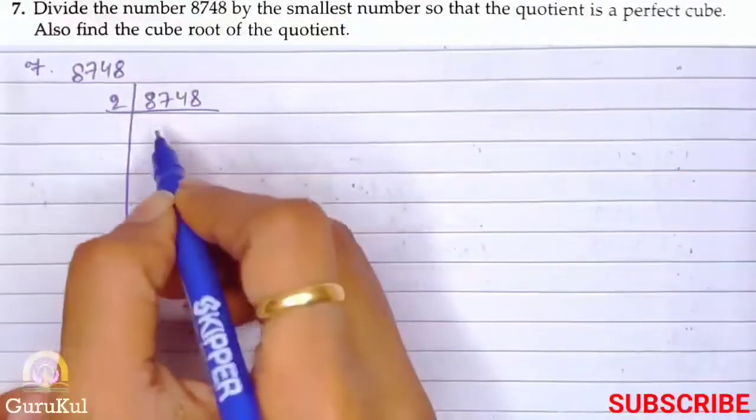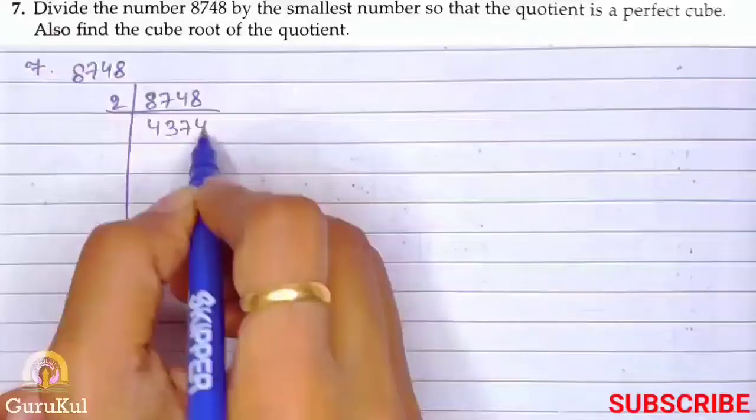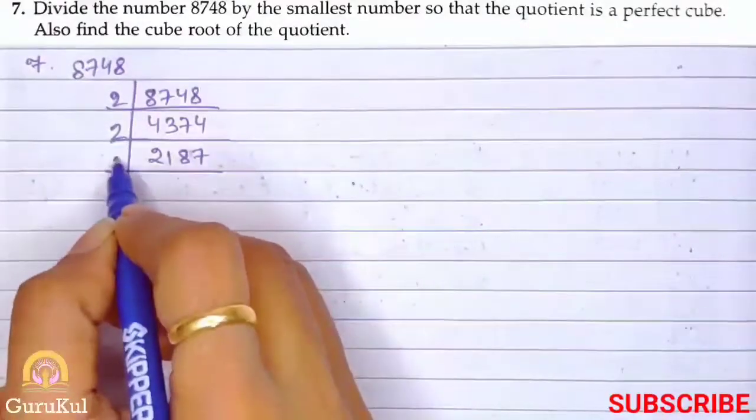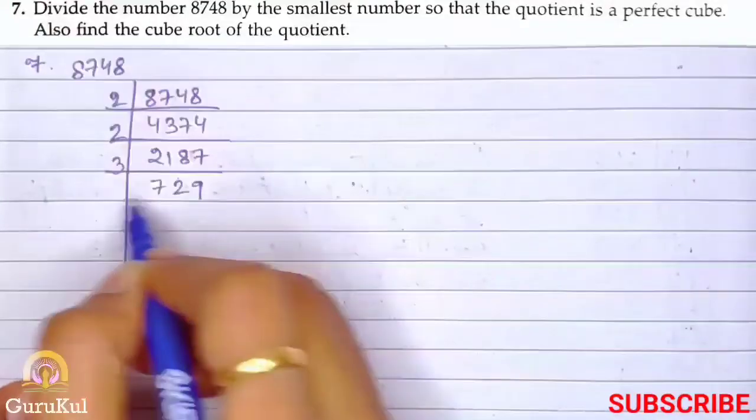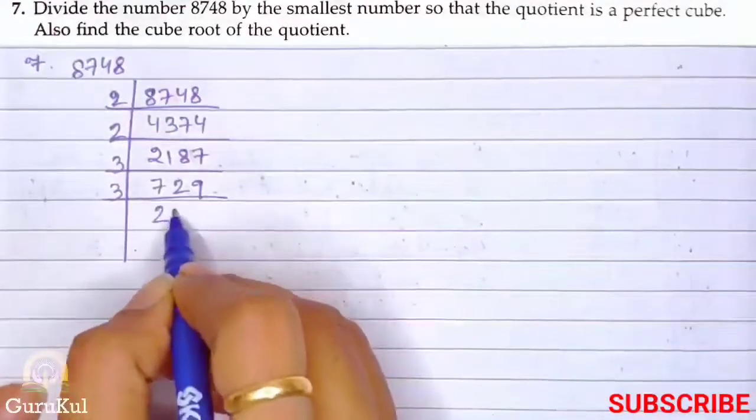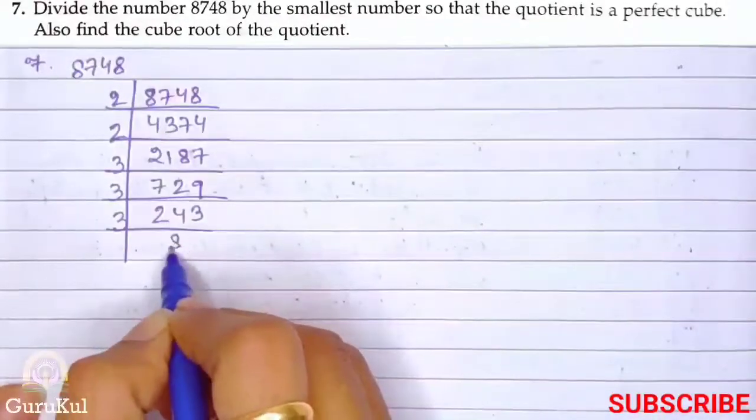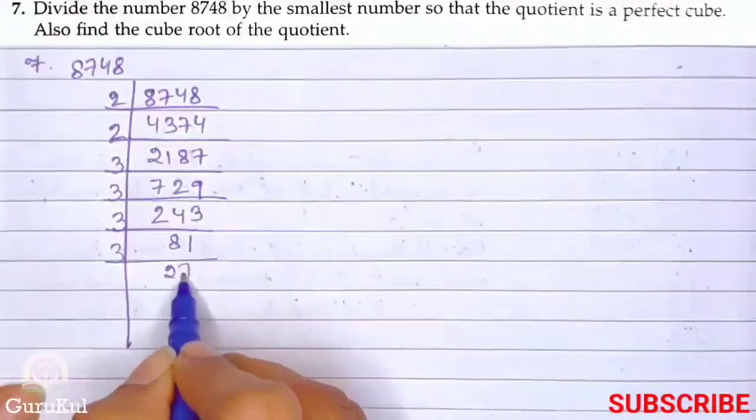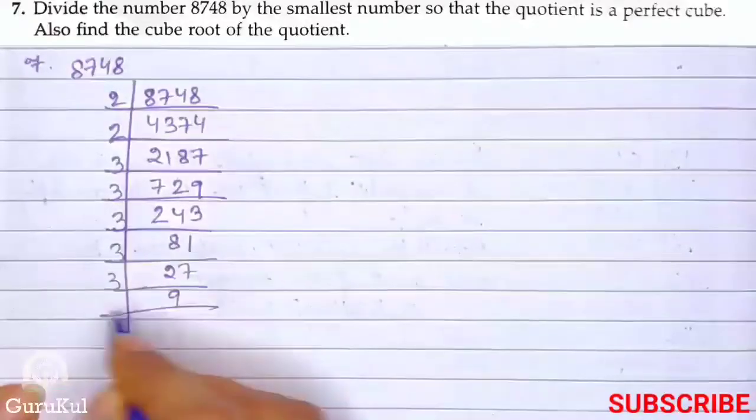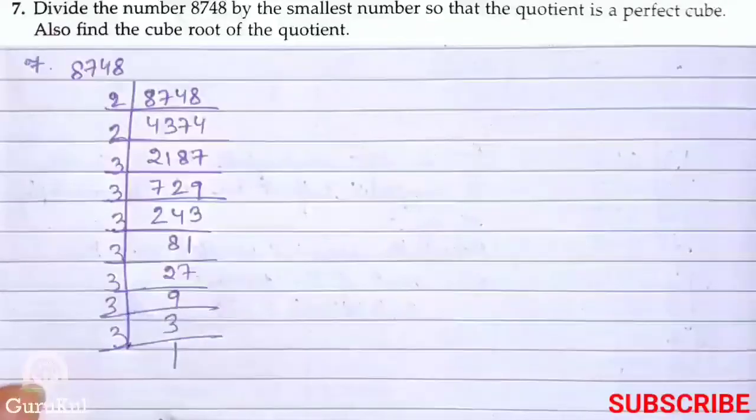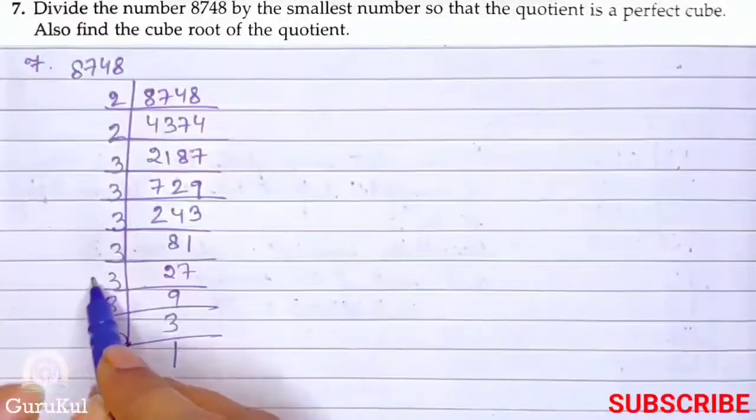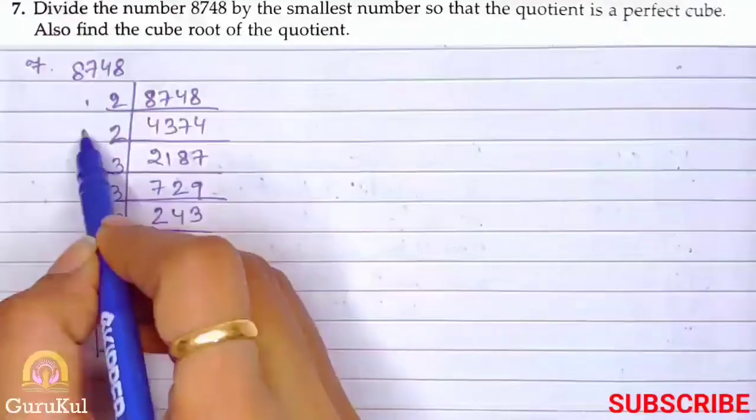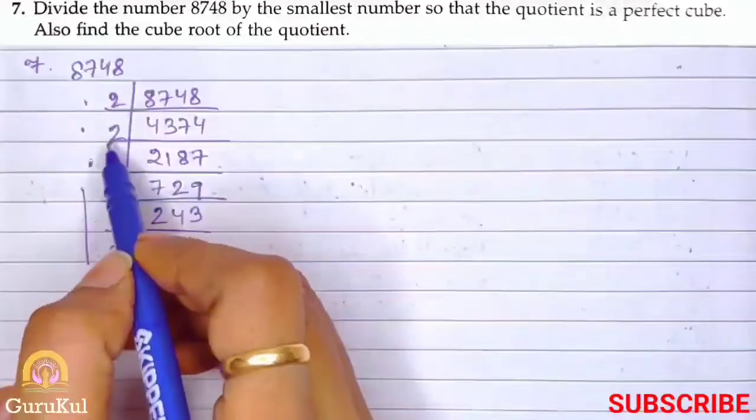8748 divided by 2 gives 4374. Again divided by 2 gives 2187. Divided by 3 gives 729, divided by 3 gives 243, divided by 3 gives 81, divided by 3 gives 27, divided by 3 gives 9, divided by 3 gives 3, divided by 3 gives 1. Now let's do grouping here. 2 × 2 and 3 is left for grouping, so here we have just been left with 2 twos.